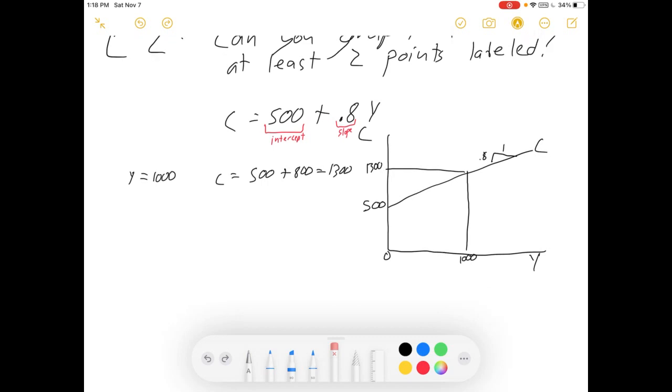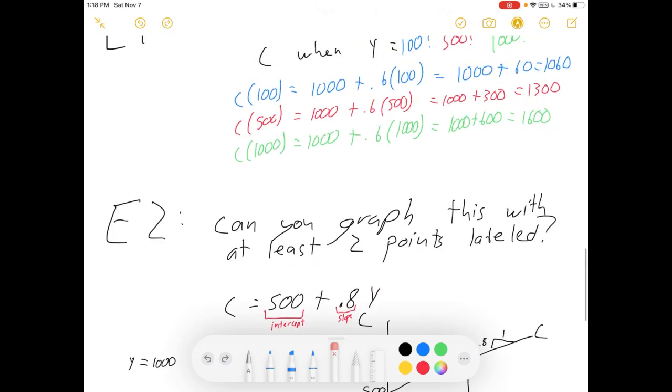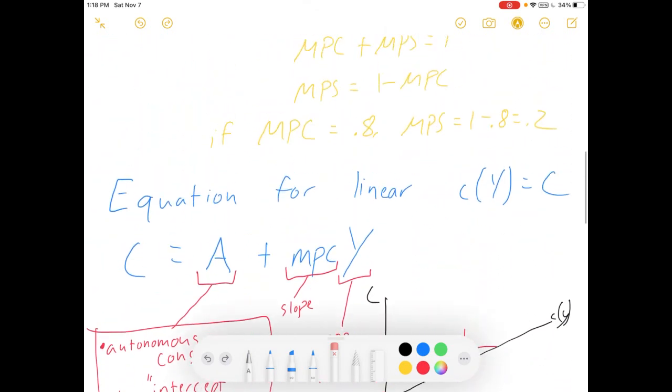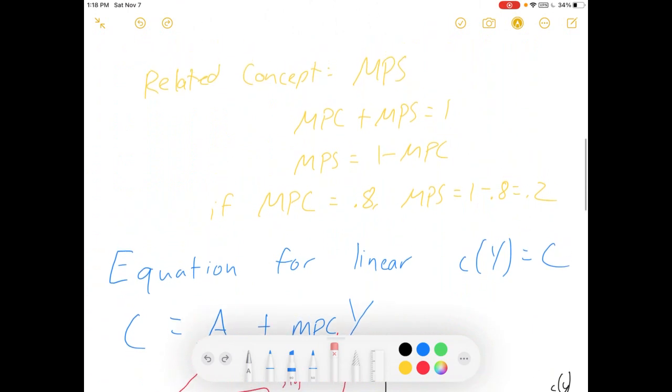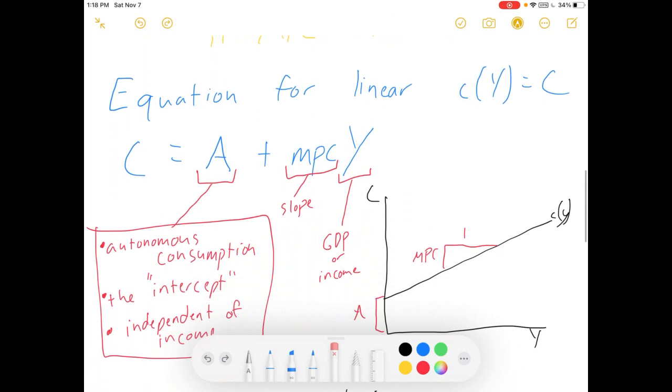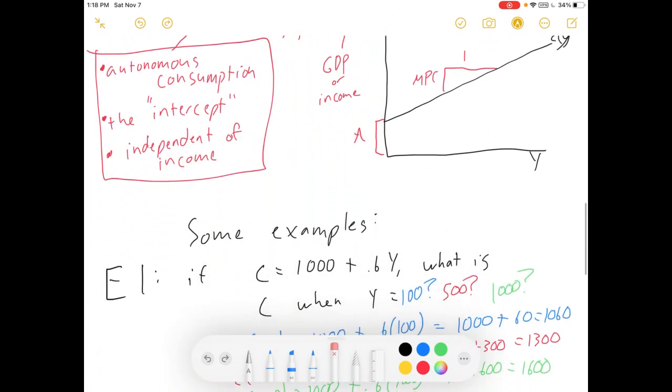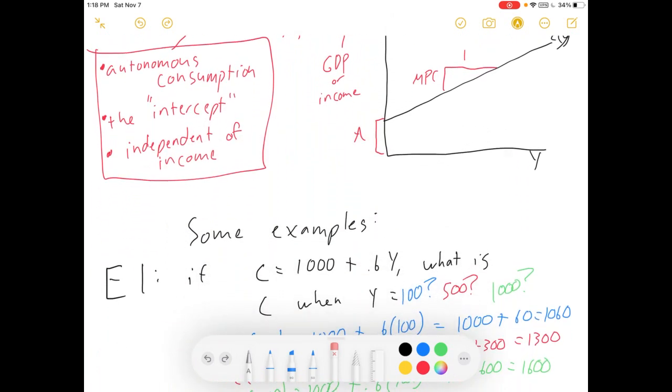So, I think that's a good enough intro to our consumption functions. In my next video, I'm going to incorporate the consumption function into the aggregate expenditures curve. And then, in the video after that, we'll build the Keynesian cross model. So, here we go, guys. Macro's about to go a little crazy for us. It's going to be fun. Thanks for watching. Good luck. And happy econ-ing.